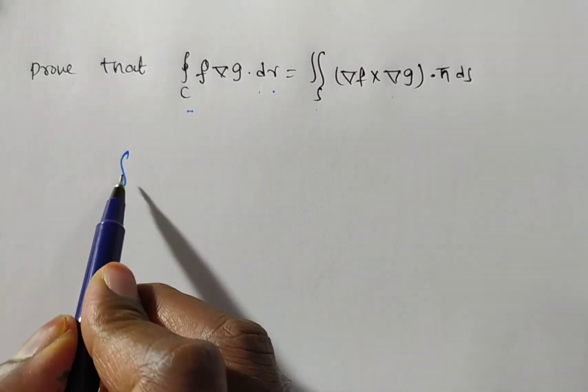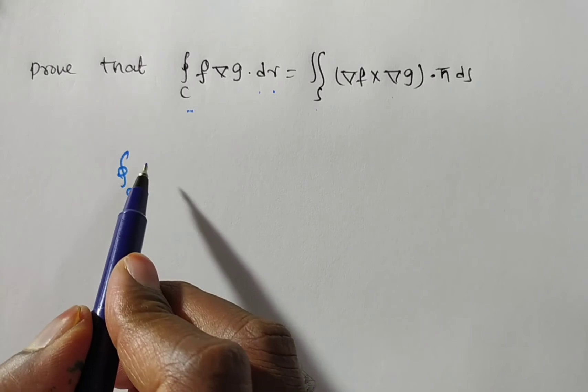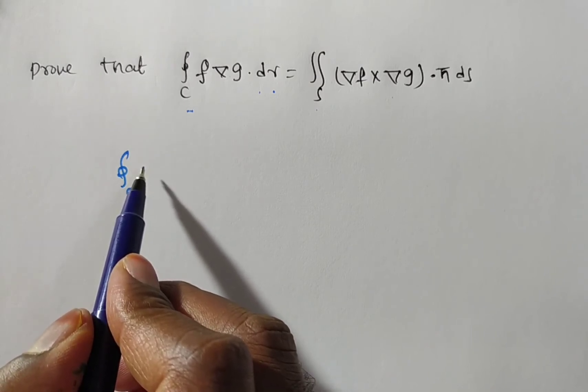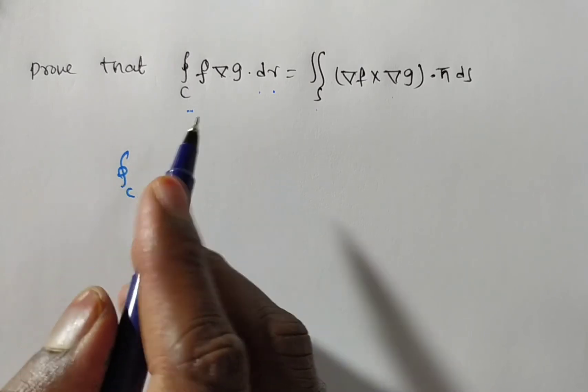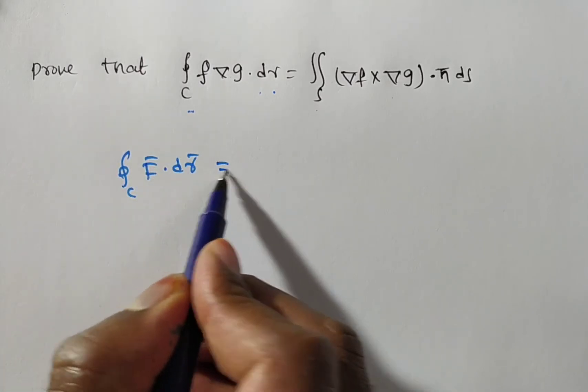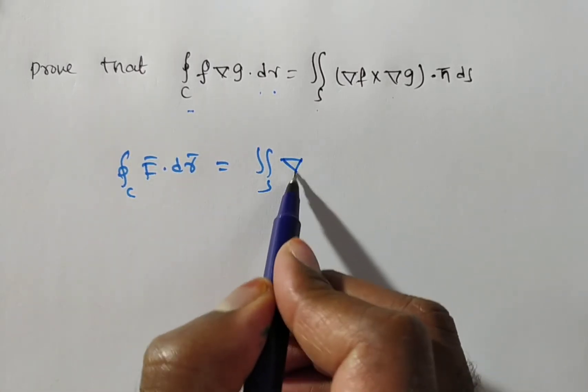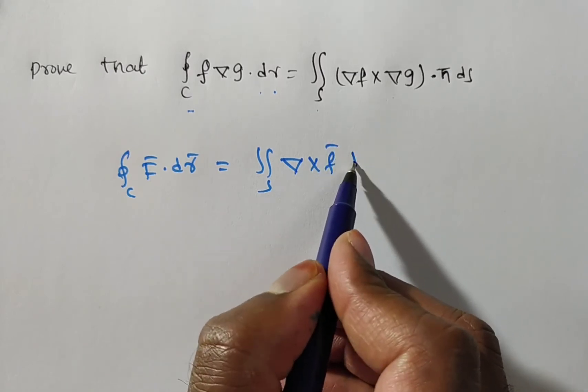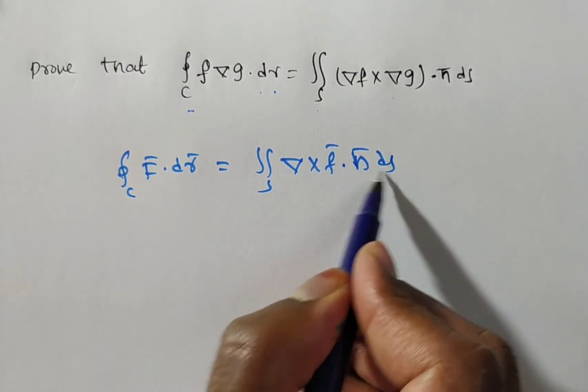What is the Stokes theorem statement we have? Integral over c, if s is a surface open surface bounded by the closed curve c, then integral over c f bar dot dr bar is equal to double integral over s del cross f bar dot n bar ds. Yes or no?